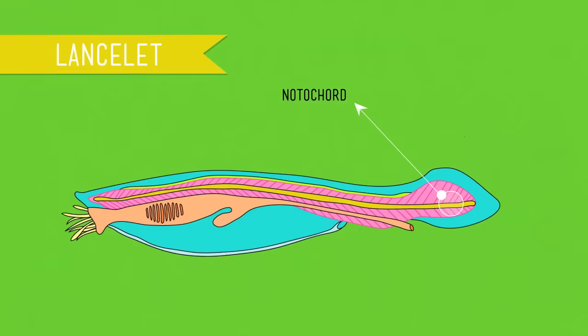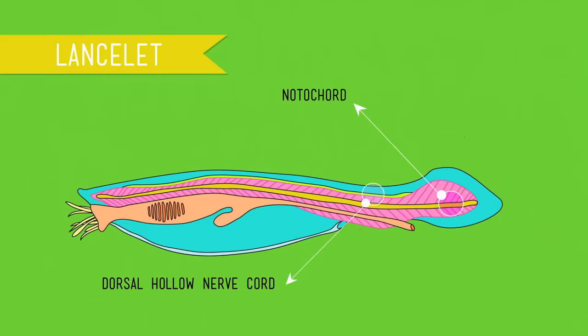Second, we have the nerve cord itself, called the dorsal hollow nerve cord, a tube made of nerve fibers that develops into the central nervous system. This is what makes Chordates different from other animal phyla, which have solid, ventral nerve cords, meaning they run along the front or stomach side.